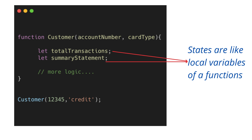So here's a definition of state: state is an object used to contain data or information about the component, and that data can change over time based on user interaction, some event, or system-generated events. If you want to change the behavior of your component over a period of time, that can be done with the help of states. This example helps you understand props versus state — parameters map to props, and local variables inside a function map to state.